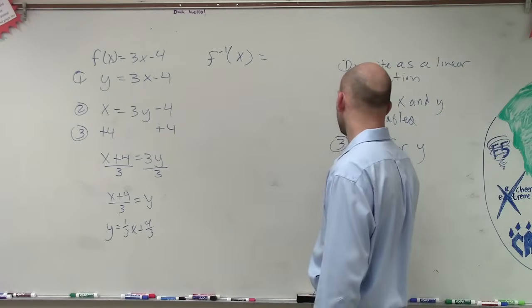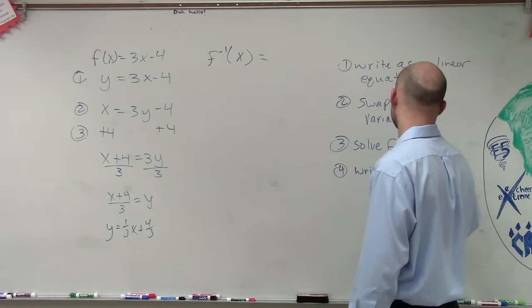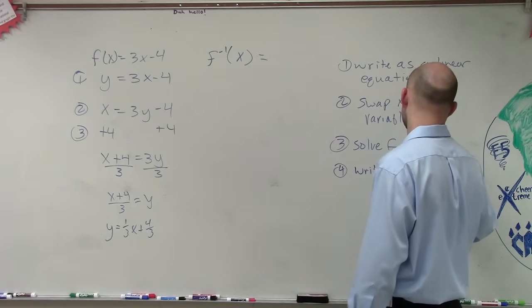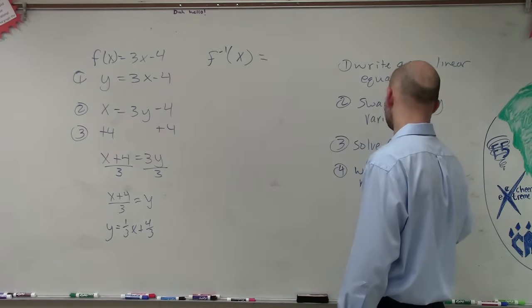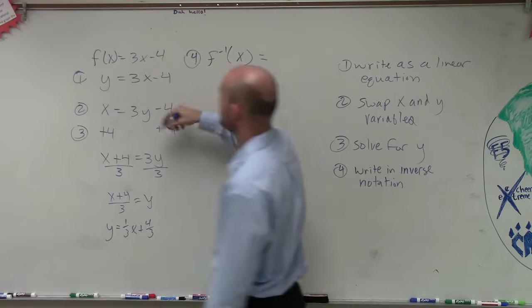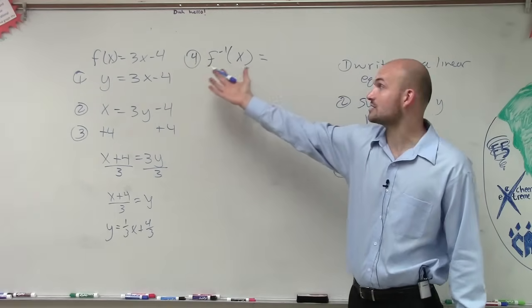And then the last step, 4, write in inverse notation. So inverse notation, ladies and gentlemen. So originally, if I had a function f of x equals 3x minus 4, inverse notation looks like this. F inverse, with that little negative 1 of x,